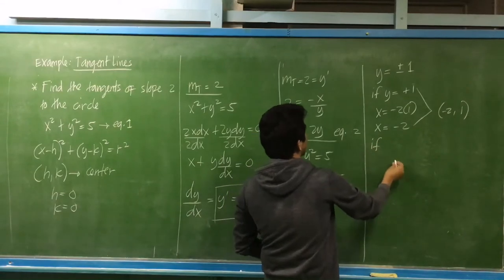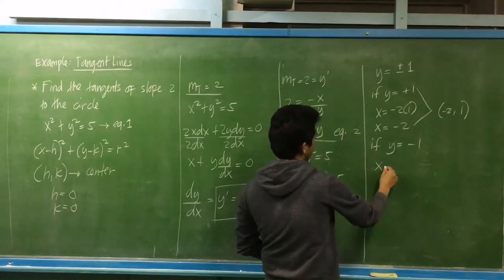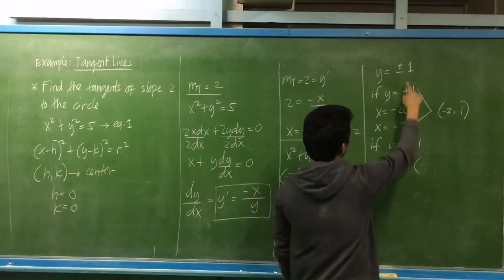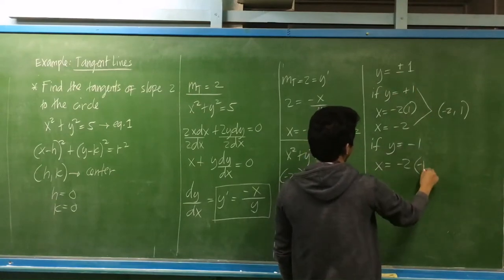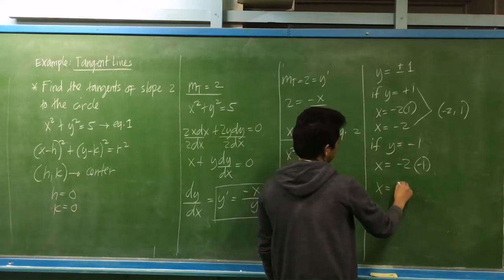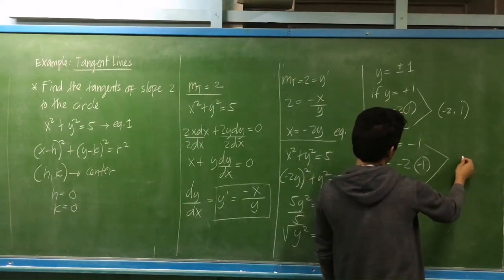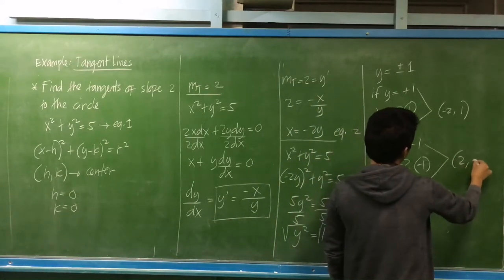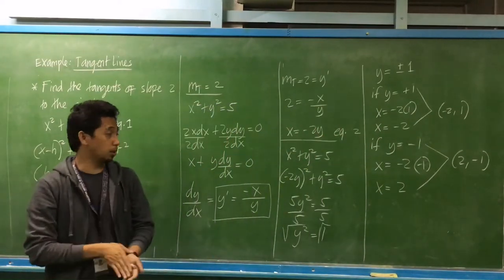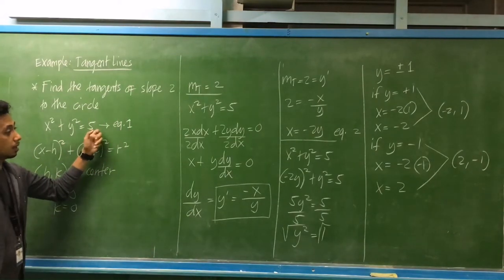If the value of y is equal to negative 1, using equation number 2 again, x is equal to negative 2 times negative 1, so x is positive 2. This gives us the second point of tangency at positive 2, negative 1. These are the points of tangency — the points of intersection of the tangent lines and the given circle.